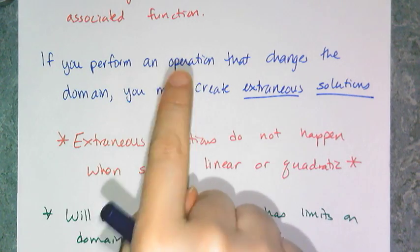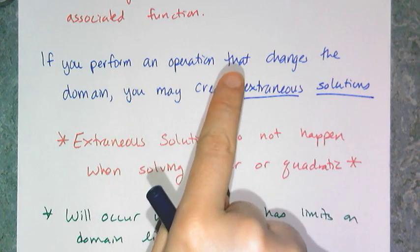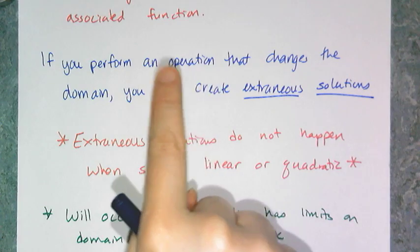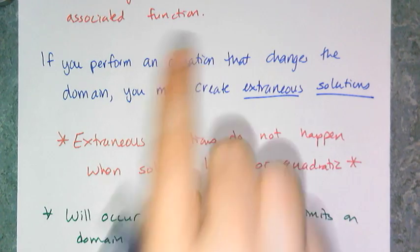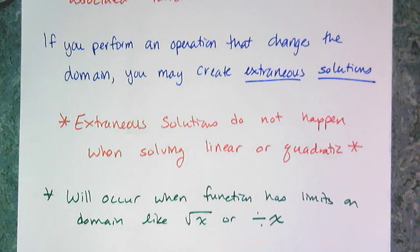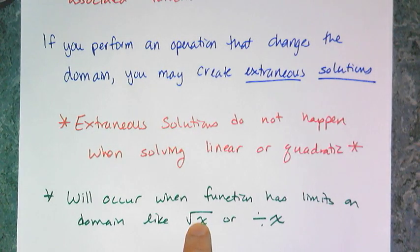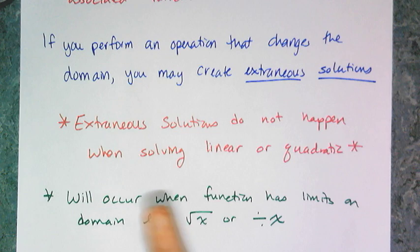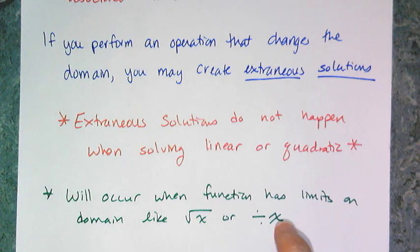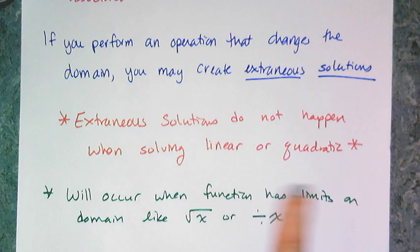If you're solving something linear or quadratic, you plug in and it doesn't work, that means you did it wrong — not extraneous. Extraneous only happens when you have a limited domain to begin with. For example, square roots of x or dividing by x have limited domains, meaning there are x values that don't work. In the case of the square root of x, I cannot have a negative number under the radical. If my solution gives a negative number under the radical, it does not work. Or if I'm dividing by some expression of x and my answer makes the denominator zero, that means it's an extraneous solution.